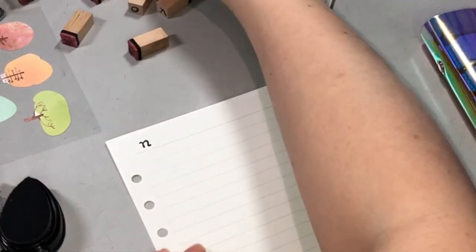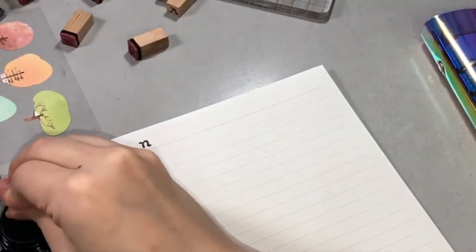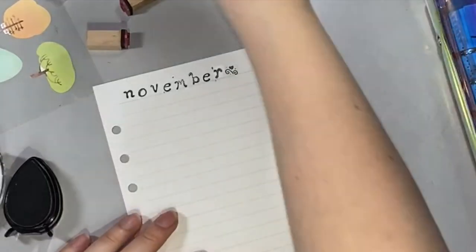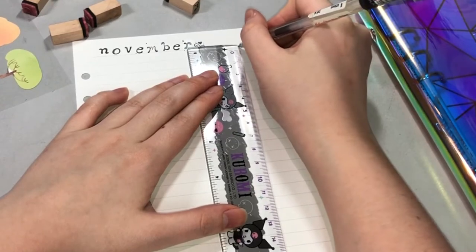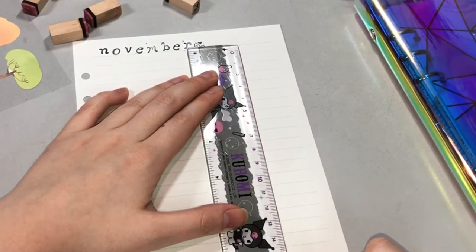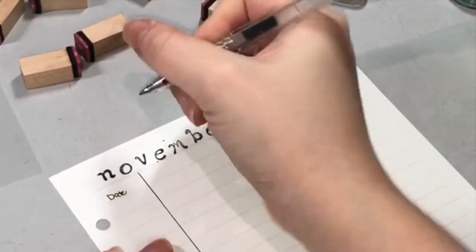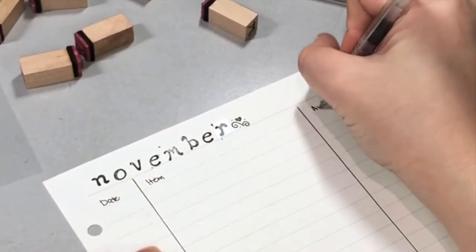For the first page we'll just put the month here, so here for the month of November. And then I'll be making three columns: the date, and then the item or the transaction or the buyer, and the last column would be the price or the amount.